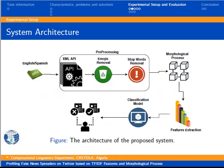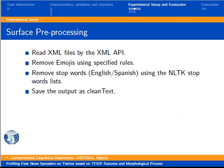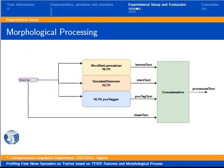As pointed out at the start, we opted for a simple classification approach divided into four main phases: preprocessing, morphological processing, feature extraction, and training and testing the classification model. In the first stage, we conducted surface preprocessing steps where we read XML files using the XML API, followed by removing emojis using specified rules and removing stop words for English and Spanish using the NLTK stop words list. Finally, we save the output as clean text.